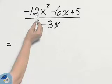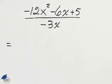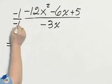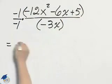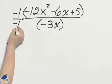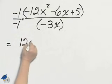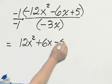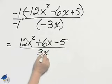In dividing a trinomial with a monomial, we will use the same technique of distribution. I'm going to do something special — I'm going to multiply by the number 1. Minus 1 over minus 1 is the number 1. But with that negative, I get 12x squared plus 6x minus 5 divided by positive 3x.